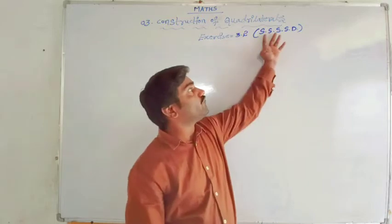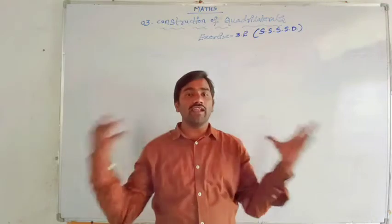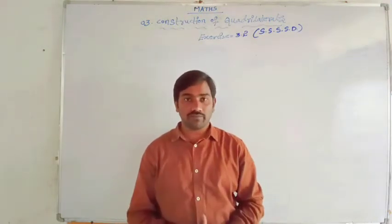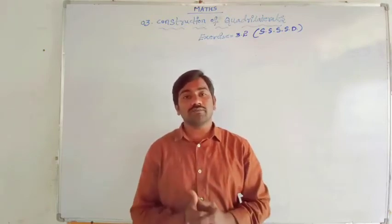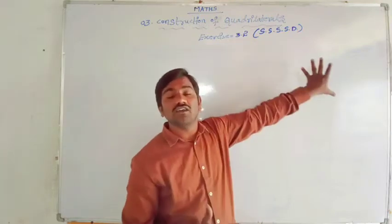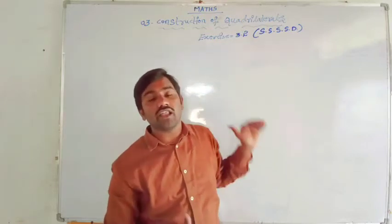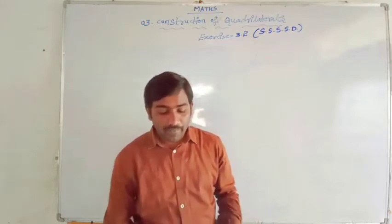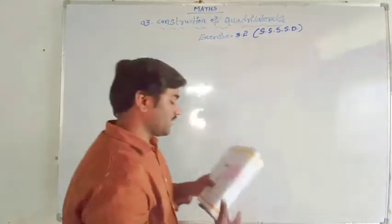Since we have 4 sides and 1 diagonal, that is completely 5 measurements, without any inconvenience we can draw our construction. To draw the constructions, we have to follow 3 minimum steps: first is rough sketch, second is fair sketch, then construction steps. These are the 3 steps we have to follow. Let us see the questions which are in exercise number 3.2.